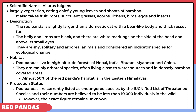Red pandas are very shy and solitary animals. They are very arboreal and are considered an indicator species of ecological change. Their habitat includes high-altitude forests of Nepal, India, Bhutan, Myanmar, and China, living close to water sources and bamboo-covered areas. In the eastern Himalayas, 50% of the red panda's habitat is present. In terms of protection status, red pandas are currently listed as an endangered species by the IUCN Red List, with their number believed to be less than 10,000 individuals in the world, though exact figures are not known.